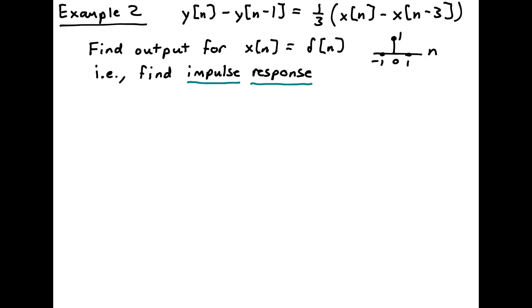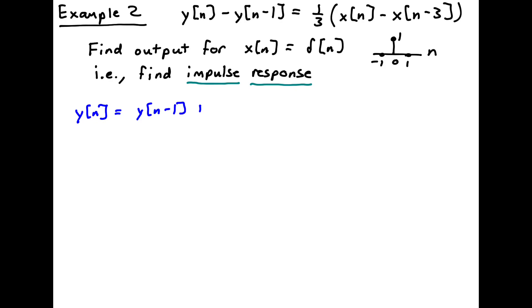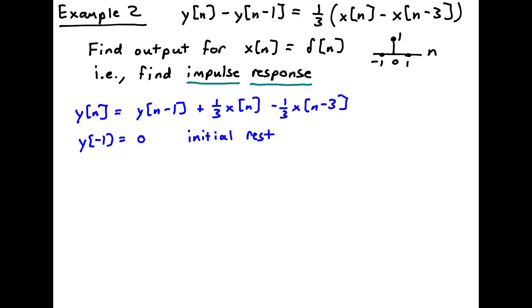For a second example, consider a different difference equation: y of n minus y of n minus 1 equals one-third times x of n minus x of n minus 3. We'll again solve for its impulse response. Rewriting in recursive form: y of n equals y of n minus 1 plus one-third x of n minus one-third x of n minus 3. From initial rest, since the input doesn't start until time zero, y of minus 1 and all previous y values are zero.